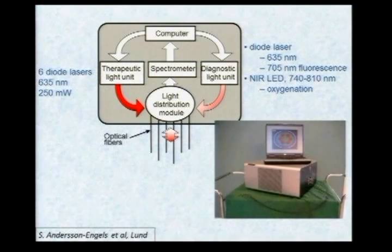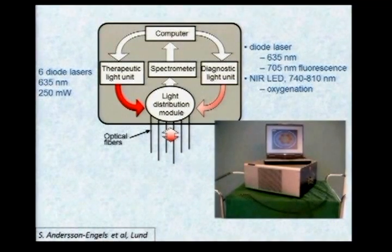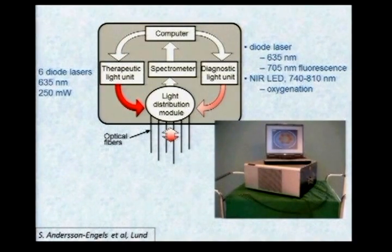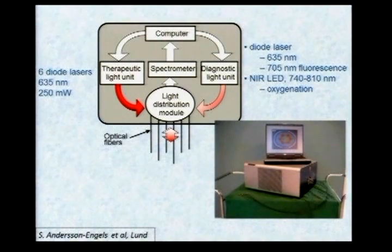As Catrino described, there are now evolving complete technology packages — there's a unit that generates the light, you distribute it through a module, and you have a diagnostic unit where you measure the light, oxygen, photosensitizer, etc. When you look at PDT, you have to realize there is not a single technical solution that will work for every type of disease. You need very simple solutions for some situations and quite complex and sophisticated solutions for others.